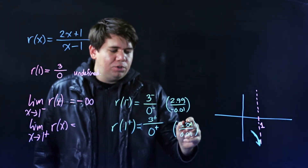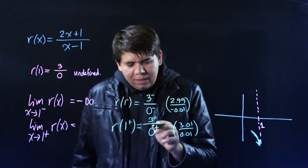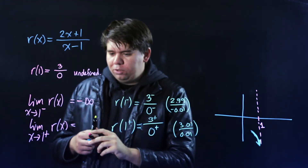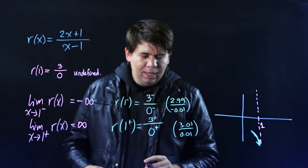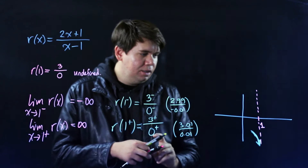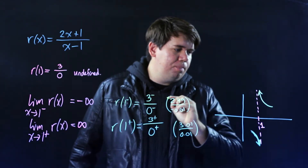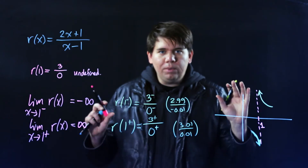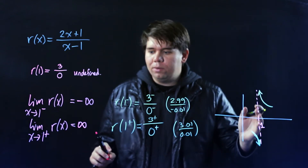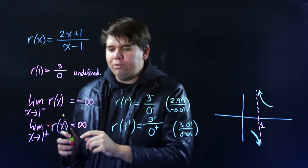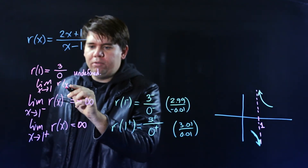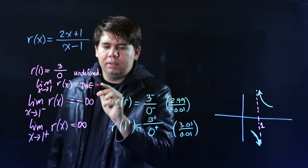Dividing by a really tiny positive number makes it blow up to positive infinity. Both numerator and denominator are positive, so the limit as x approaches 1 from the right is positive infinity. Since the left-hand and right-hand limits disagree, the overall limit as x approaches 1 does not exist.